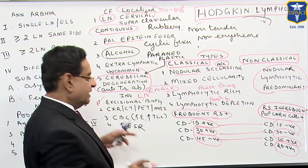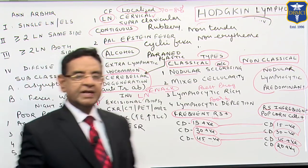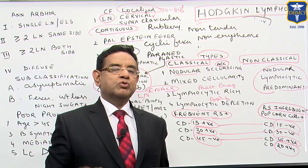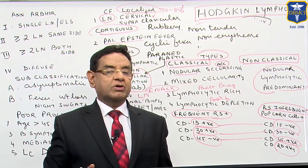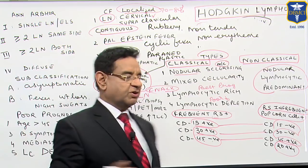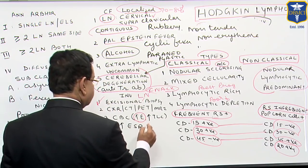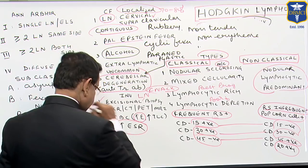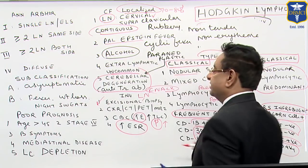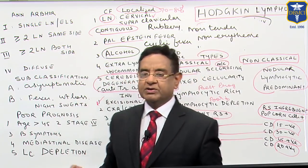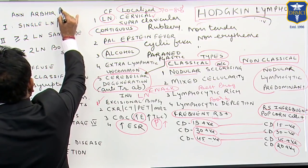The next step, other than routine investigations, is chest X-ray, CT, PET, and MRI. These are done to know the staging of the disease, because the single most important prognostic feature is staging. In CBC, we may find eosinophilia — a very prominent feature — ESR is raised, and even the platelet count may be increased.